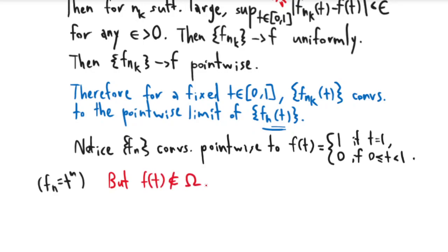But f(t) is not an element of Ω, because this is clearly not a continuous function. It's just equal to 0 and then it has a discontinuity when t = 1.